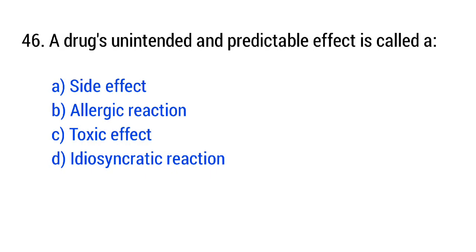Question 46. A drug's unintended and predictable effect is called a... The right answer is option A: Side effect.